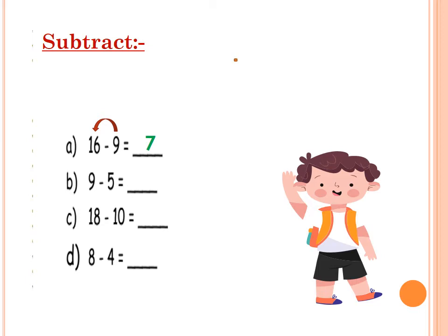9 minus 5: count after 5 to reach 9. How many fingers to reach 9? 4. Excellent. 18 minus 10: after 10 — 11, 12, 13, 14, 15, 16, 17, 18. Stop at 18. How many fingers to reach 18? 8. Excellent.